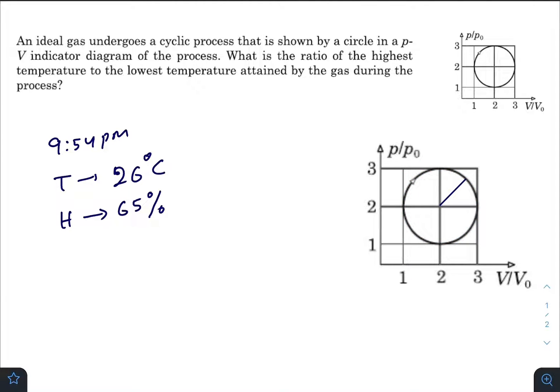Let us consider an angle theta and we will take the help of polar coordinates here. Let the coordinates be V by V₀ comma p by p₀.